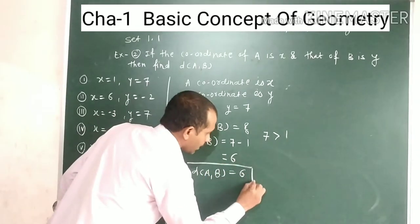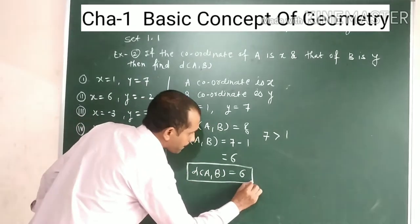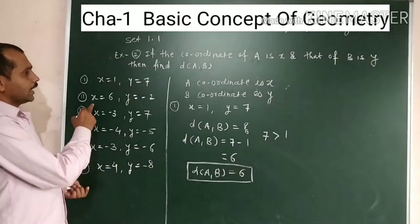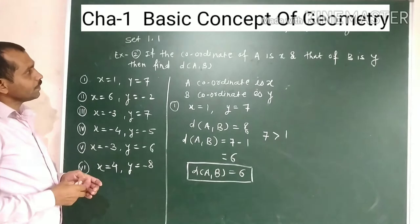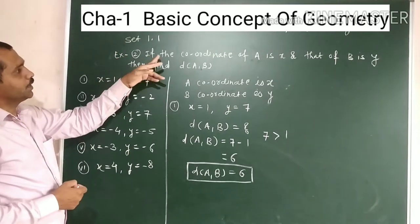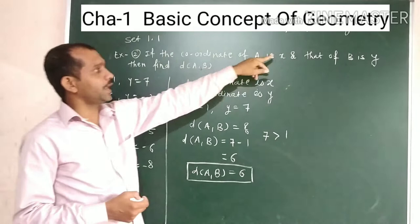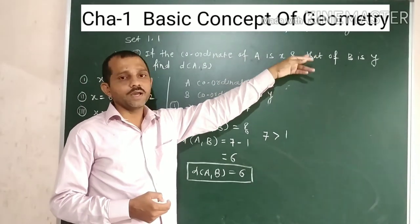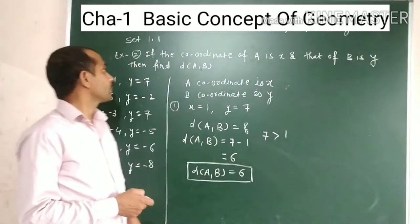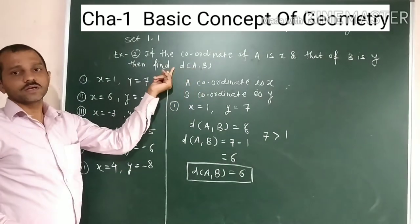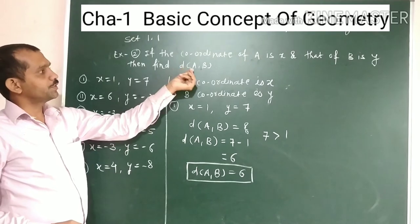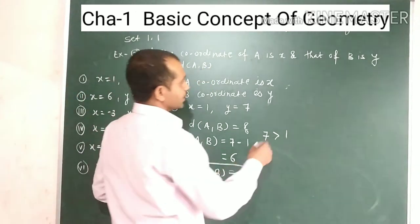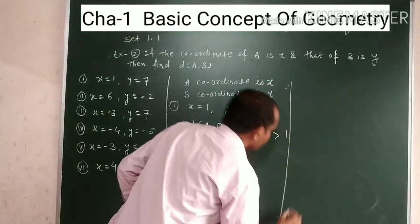If we compare A to B, the distance between A and B is 6. The first example gives distance equal to 6. Now, A coordinate is x and B coordinate is y. Example number 2.